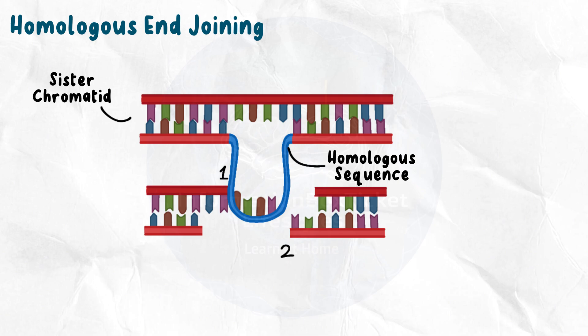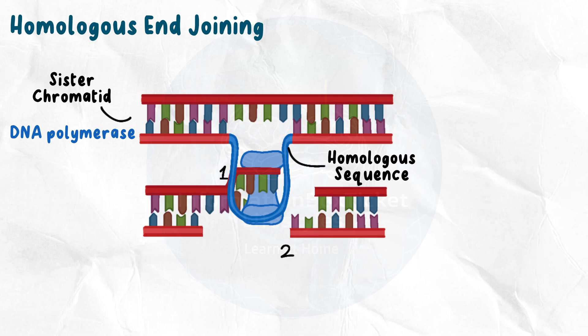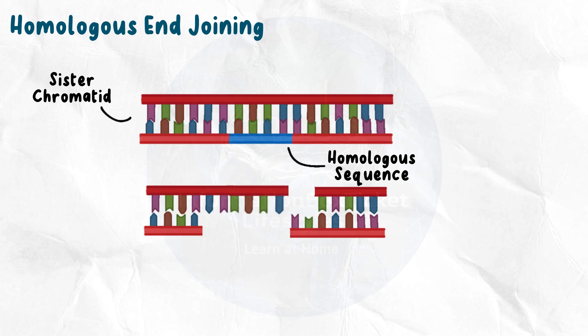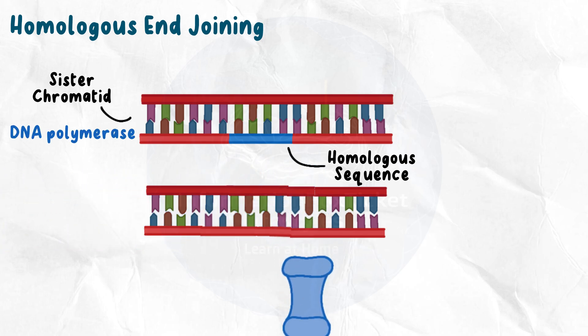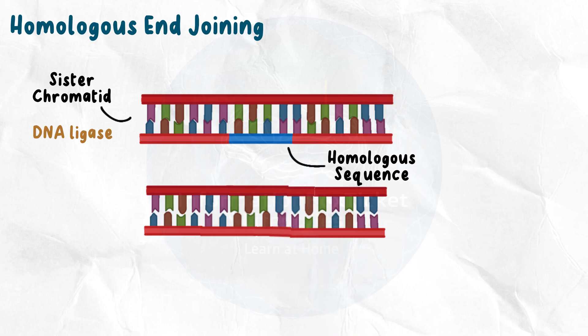End1 then forms a loop in the homologous DNA by pairing with the corresponding strand of the intact homologous DNA region. DNA polymerase adds nucleotides to End1 until it reaches a complementary sequence to End2. The homologous DNA is then released by End1, and its last nucleotides attach to the final nucleotides of End2. DNA polymerase fills the gaps on both sides of the union, and DNA ligase seals the bond. Since homologous recombination uses a sister chromatid as a template, it is a more reliable repair mechanism with no loss of nucleotides.